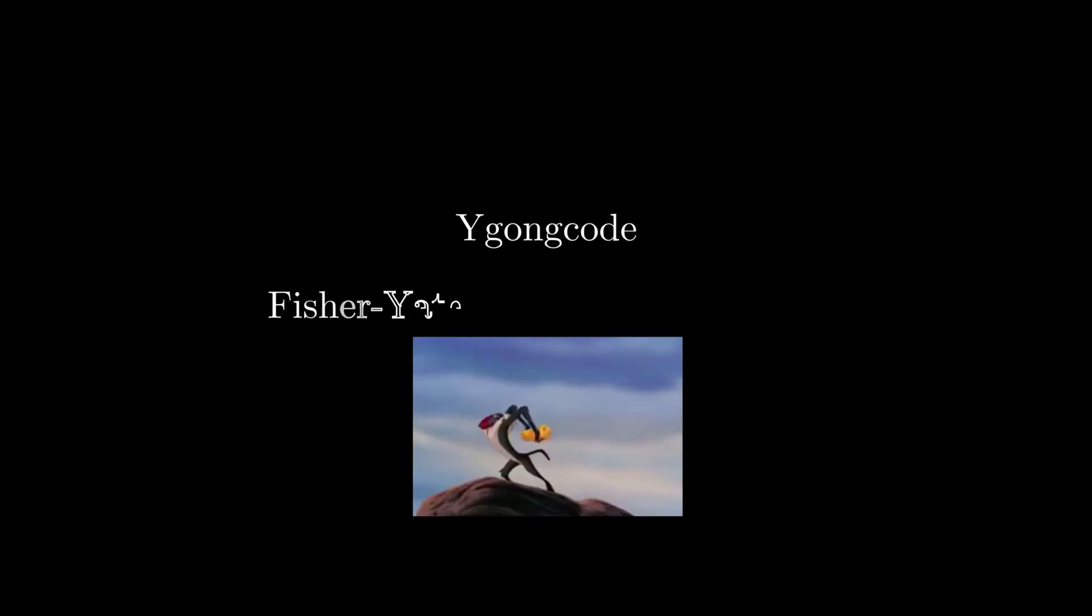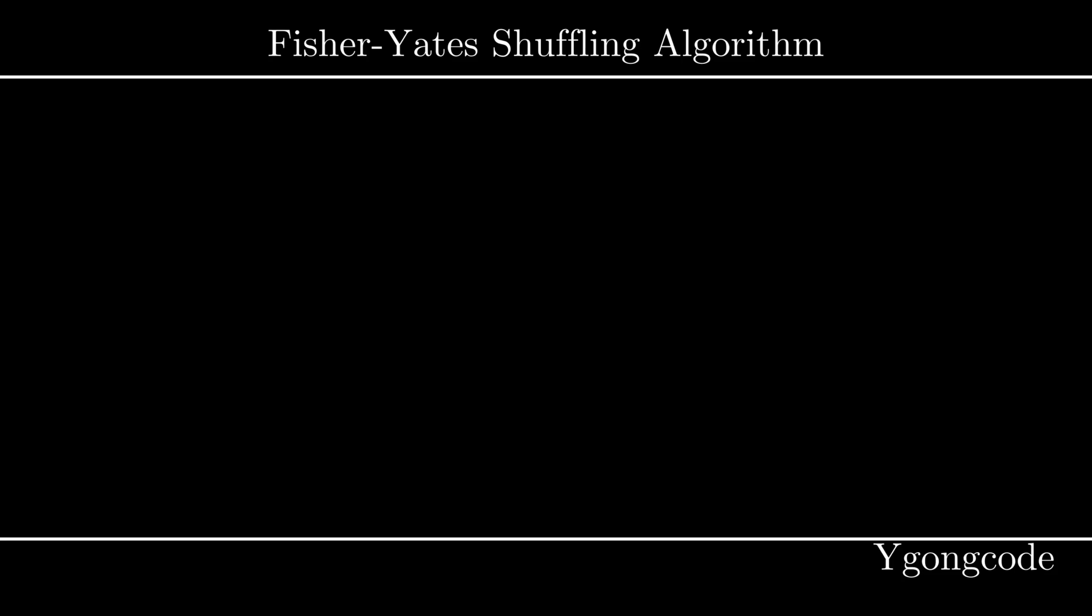Today we will visualize the Fisher shuffling algorithm. Given an array of elements, how can we shuffle the elements such that it produces a random permutation?